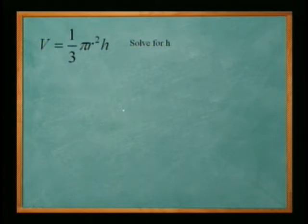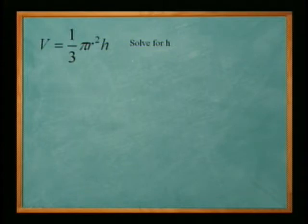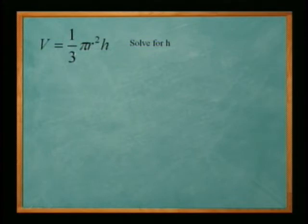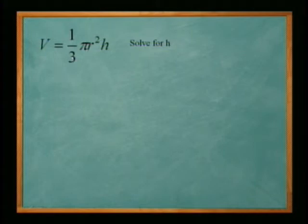Let's take a look at this first one: v equals one-third pi r squared h, and we want to solve for h. So we need to isolate h. You have to look at each of the other terms and see how it relates to h, then do the opposite. The one-third means multiplication, so we need to divide by one-third, or with fractions multiply by the reciprocal, which is times three.